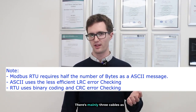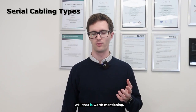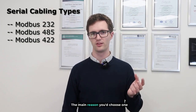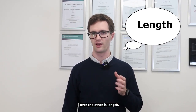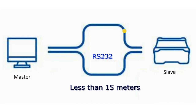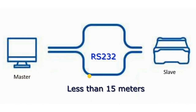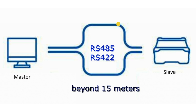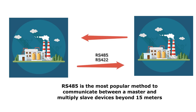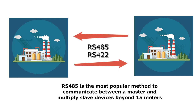There are mainly three cable types worth mentioning: Modbus 232, 485, and 422. The main reason you'd choose one over the other is length. Modbus 232 is mainly used for short communication, perhaps under 15 meters or so. 485 is used for longer wire lengths, so if you need to send data across a site beyond 15 meters, it's a wiser choice to use that type of cable.